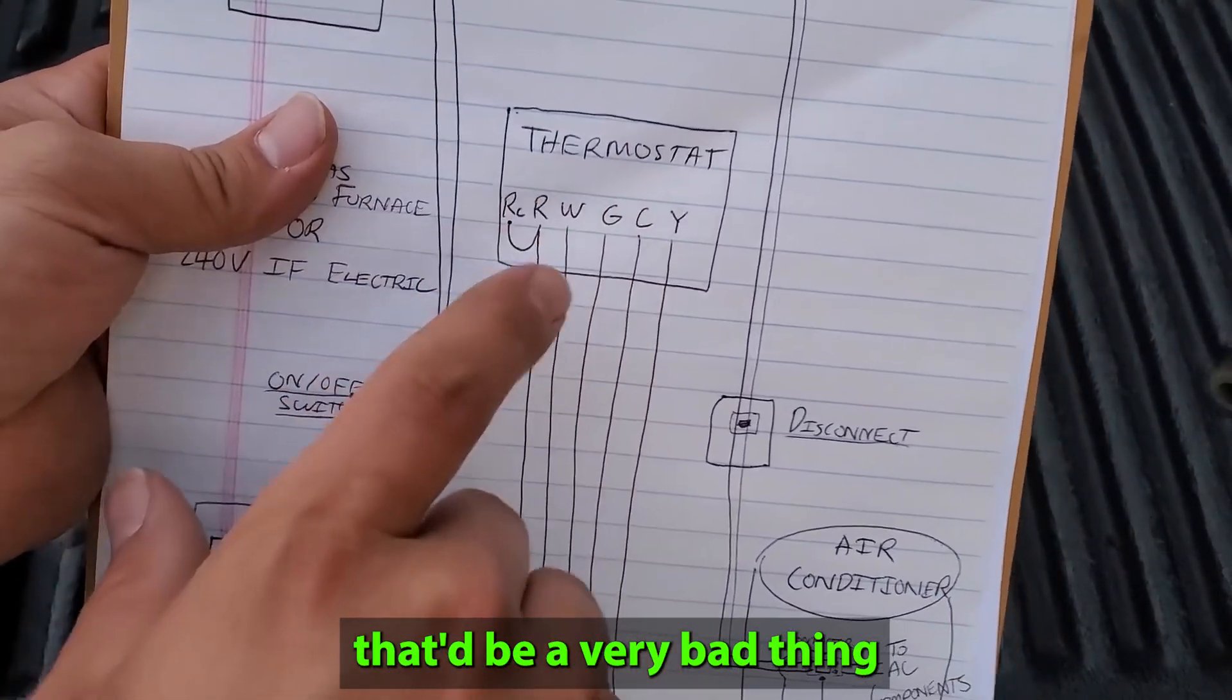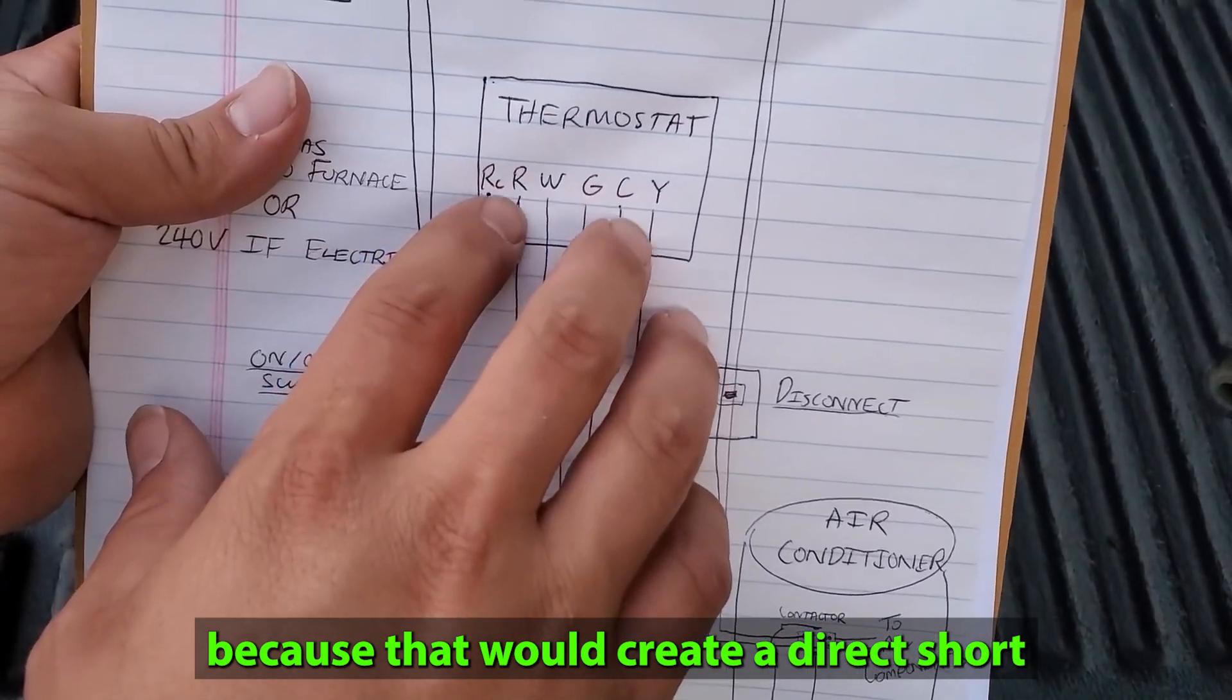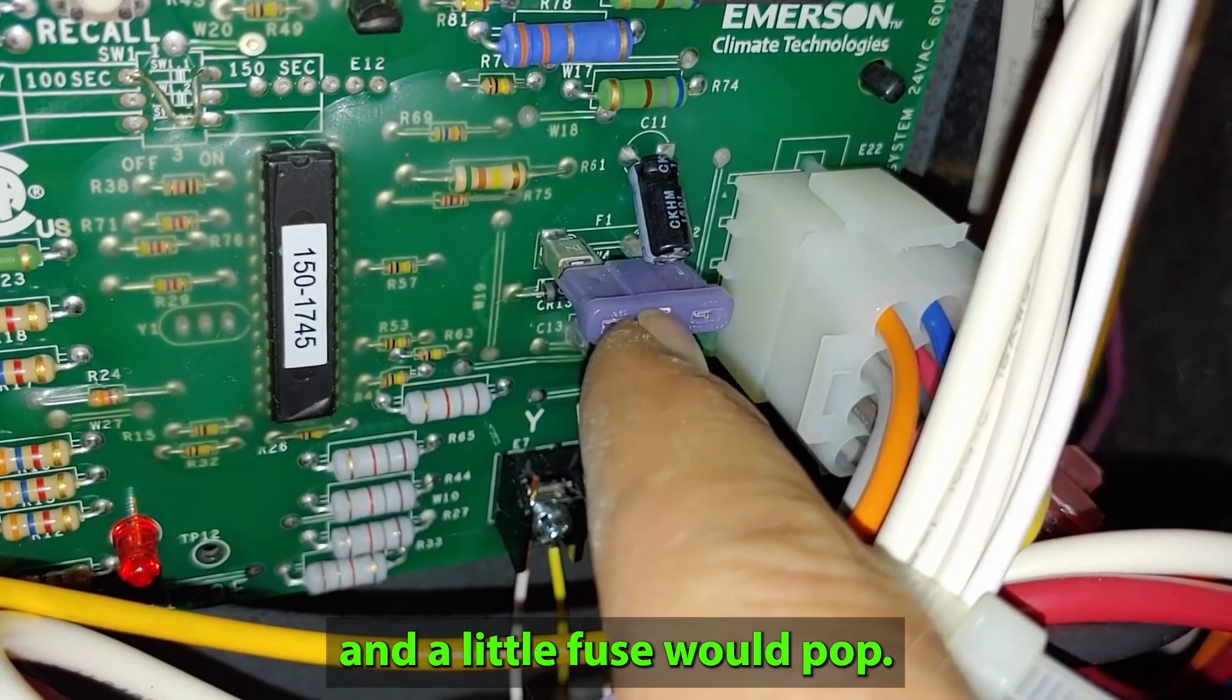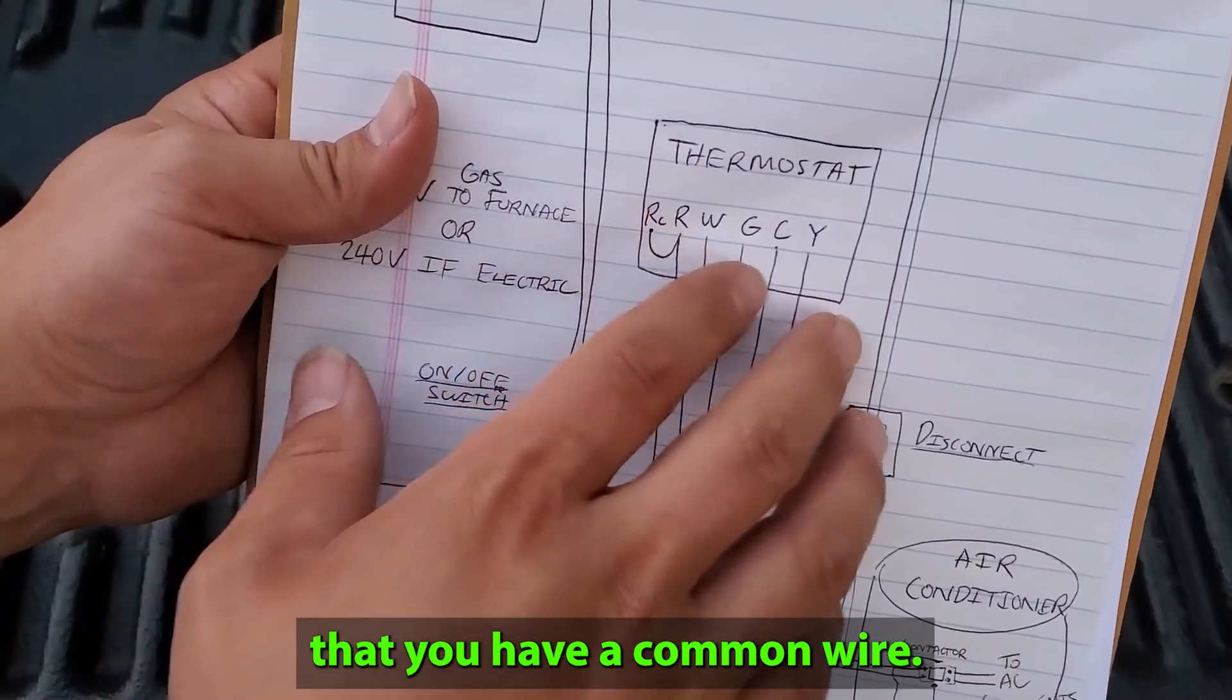If we were to jumper R to C, that would be a very bad thing because that would create a direct short, and you'd be shorting out that 24 volt circuit, and a little fuse would pop. Some digital thermostats require that you have a common wire.